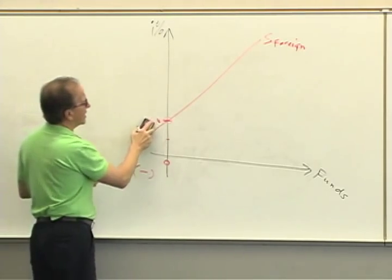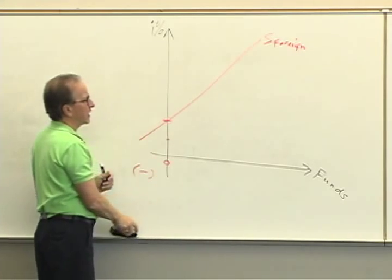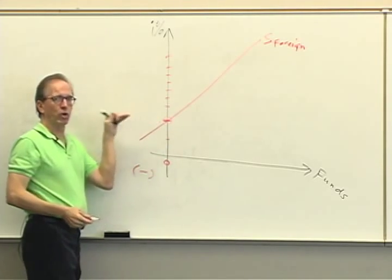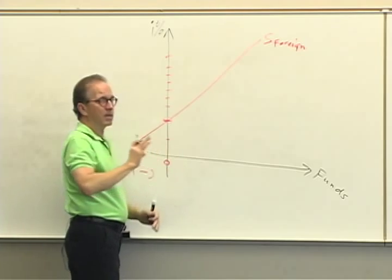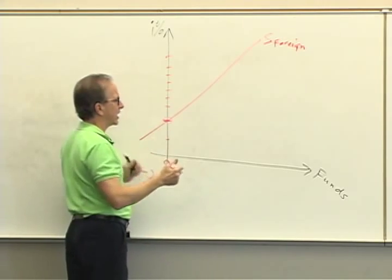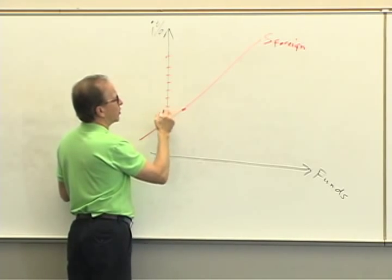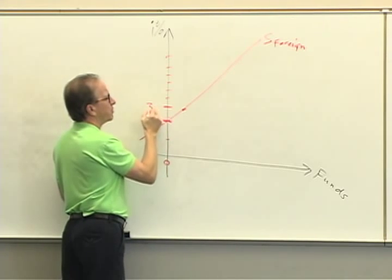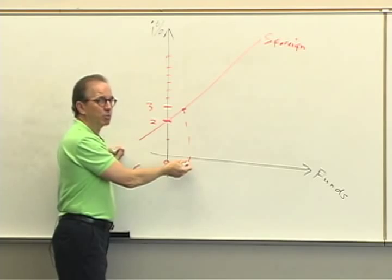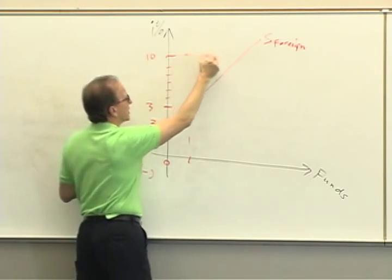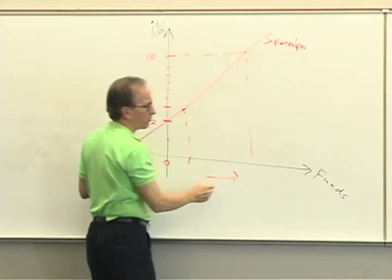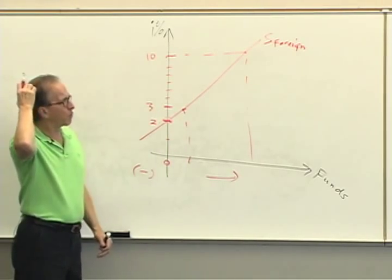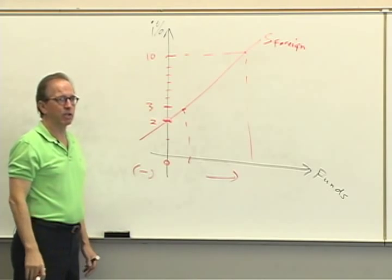Assuming interest rates are high enough in the United States, increases above the world rate mean more and more funds come from overseas. If the interest rate is 3% in the United States we get a fairly small amount from overseas; if it's 10%, we get a large amount. That's how the foreign sector affects the U.S. economy.